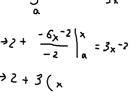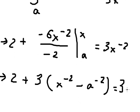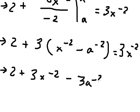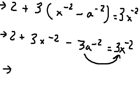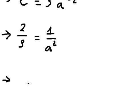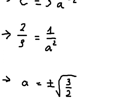We substitute s and a here. We simplify for both sides, putting this on the right side, then divide both sides by 3. Now we can find the value of a, which is the positive or negative square root of 3 over 2. This is the end — thank you for watching.